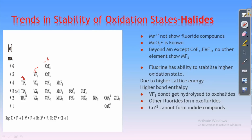Why do these elements show fluoride compounds at higher oxidation states? Because fluorides and oxides are highly electronegative elements and they are very small in size. Because of this smaller size, they can form stable compounds with smaller cations, and thus form stable compounds with transition metals having a higher oxidation state.